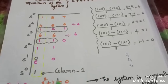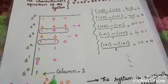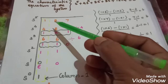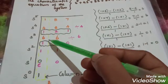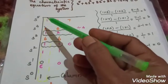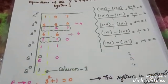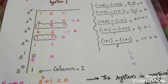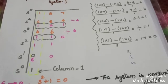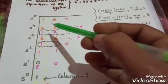Now, what do you do? Check the first column. A sign change is present. Check the first column for sign changes.